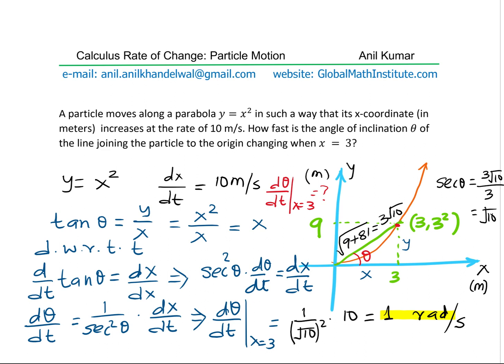So we get 3 square root 10. From here, we find that secant theta will be hypotenuse over the adjacent side x, which is 3. So 3 square root 10 divided by 3 gives us square root 10 as the value of secant theta.